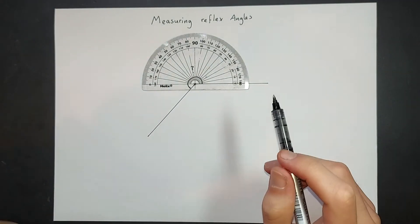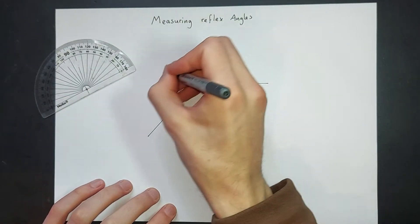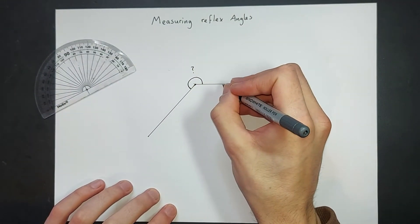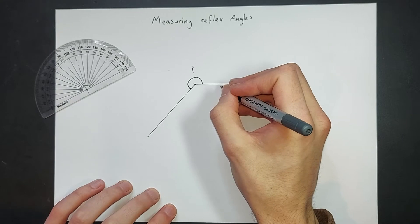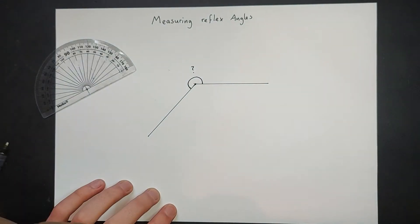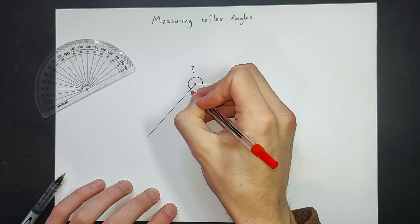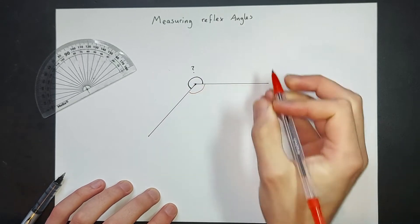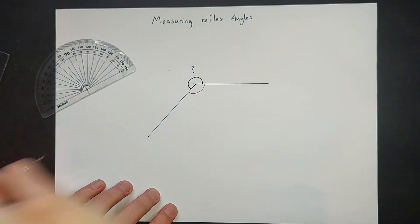So what we're going to do is we're going to use the fact that if you turned all the way around, that would be 360 degrees, but we're not turning, we're not including this turn here. So if we take 360...